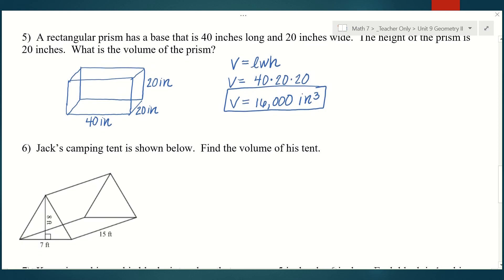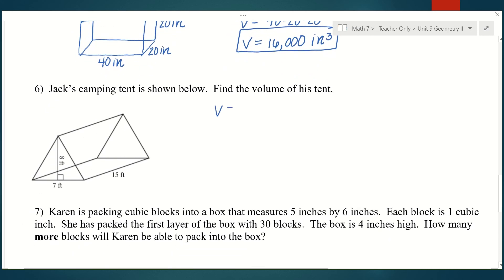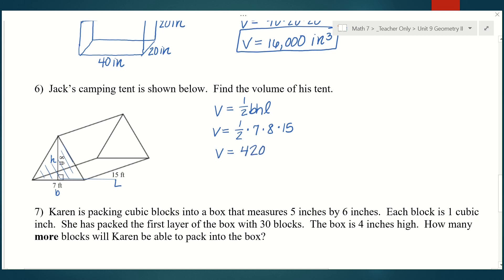Number six: Jack's camping tent is a triangular prism. We do one-half base times height — that's the area of the triangular base — times the length of the prism. The triangle has a base of seven and a height of eight, so one-half times seven times eight, then times the length of 15. The way I type this in my calculator is seven times eight times 15, then divide by two. That gives 420 cubic feet.